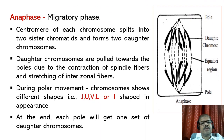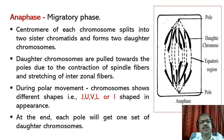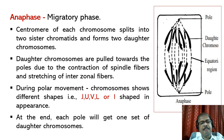In anaphase, the centromere of each chromosome splits into two sister chromatids, forming two daughter chromosomes. The daughter chromosomes are pulled towards the poles due to contraction of spindle fibers and stretching of interzonal fibers. During polar movement, chromosomes show different shapes like J, U, V, L, or I, based on the position of the centromere. At the end of anaphase, each pole receives one set of daughter chromosomes. It is the shortest phase and is also known as the migratory phase.